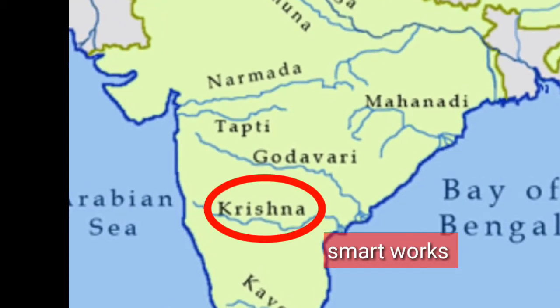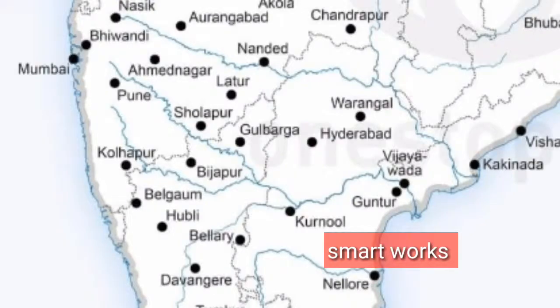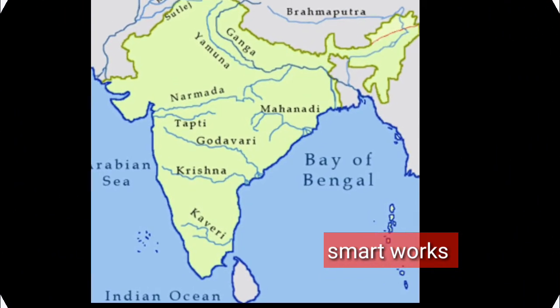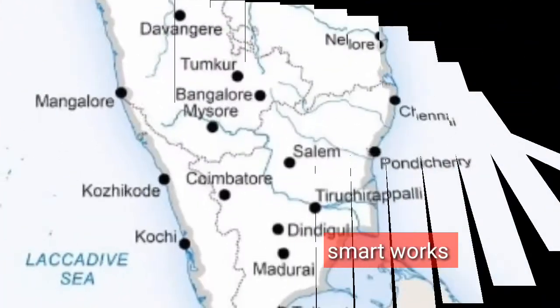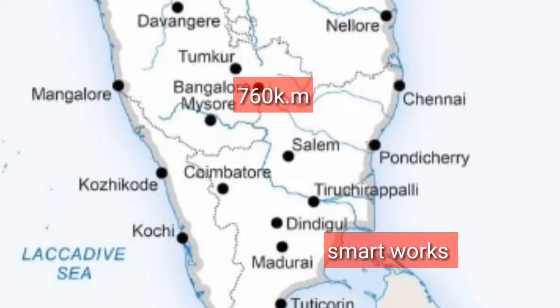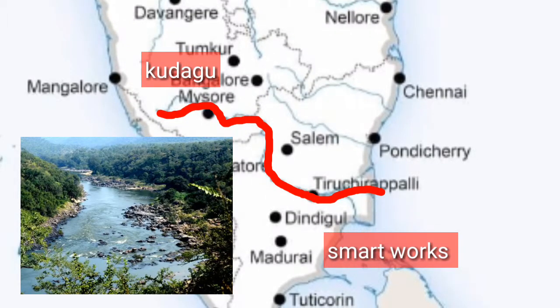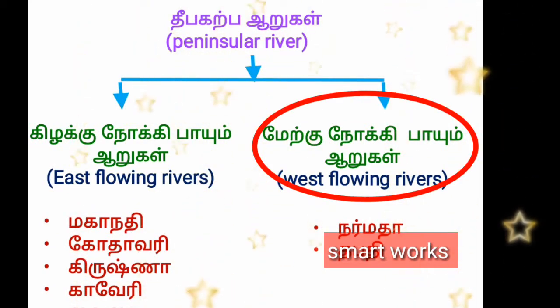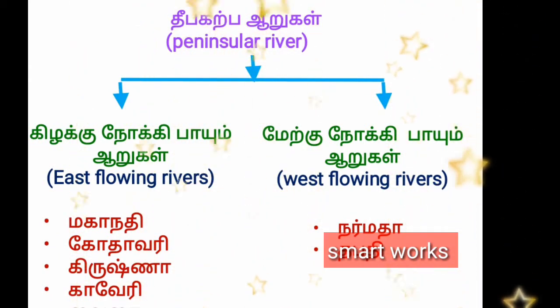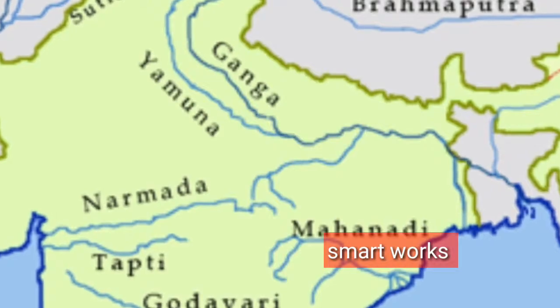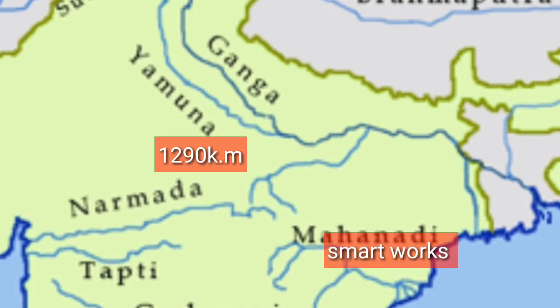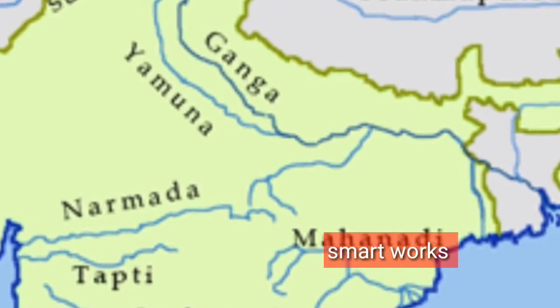Krishna. This is the name of Godavari. The Godavari River — this is also known as the American Siharathari.